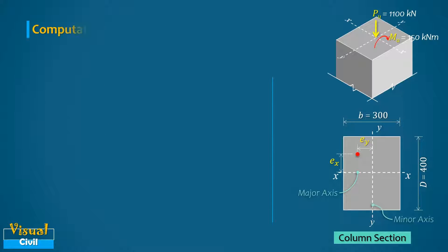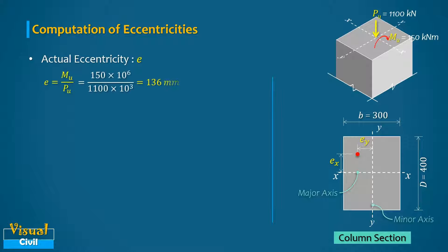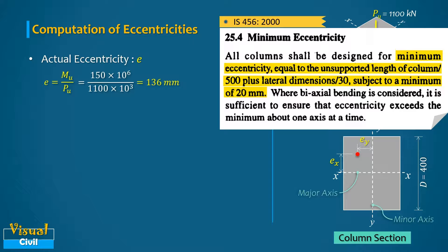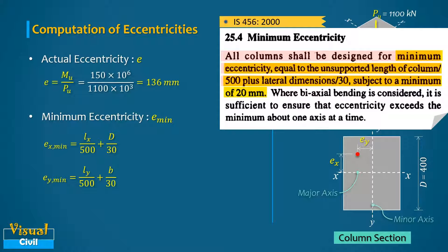In the next step, compute the eccentricities. First, calculate the actual eccentricity due to moment, which equals 136 mm. As per Clause 25.4, all columns shall be designed for minimum eccentricity equal to (unsupported length/500) + (lateral dimension/30), subject to a minimum of 20 mm. Calculate the minimum eccentricities ex,min and ey,min with respect to the major and minor axes.